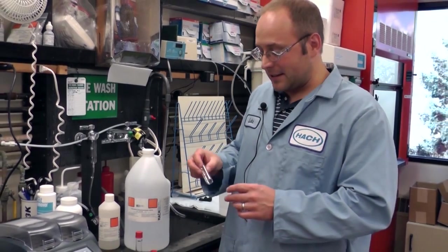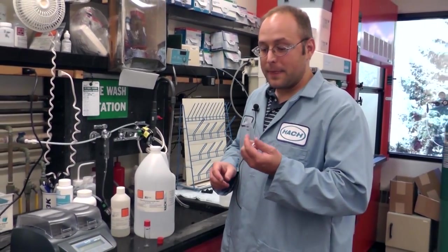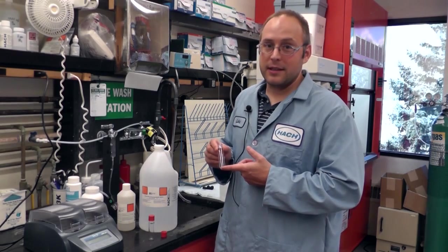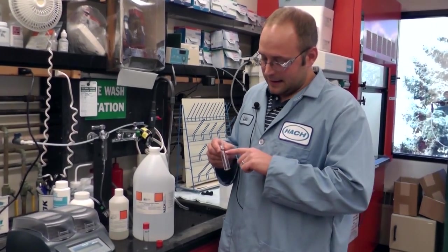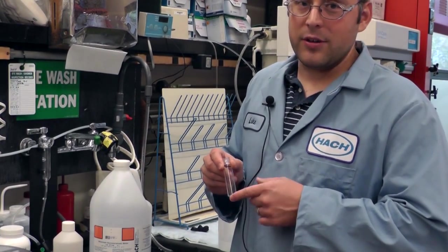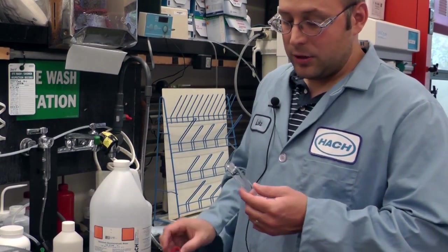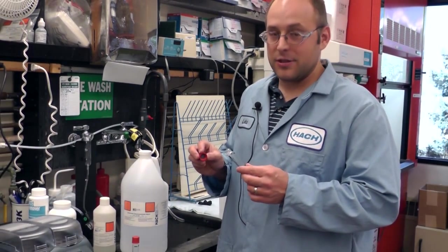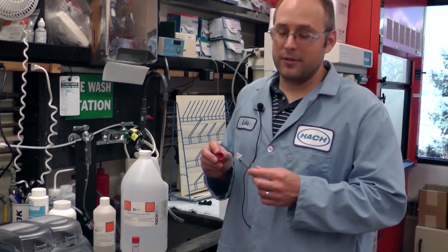Once you have your vials clean you're going to want to mark the 15 milliliter mark on each vial. So what I did is I pipetted 15 milliliters into this vial and then I made a mark here at the bottom of the meniscus so I knew exactly where that volume was. This is going to help you in taking your samples in the future because you don't want to generally be using a pipette to fill your vials.